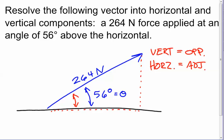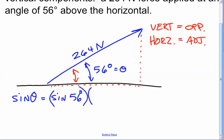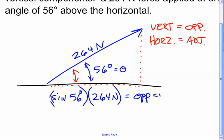So if we use our sine, cosine, and theta rules in connection with that, we can get these components. The sine of theta, which is equal to the sine of 56 degrees, multiplied by the hypotenuse — which is 264 Newtons — is going to give us the side opposite, which is the vertical component. That vertical component is sine of 56 times 264, which equals 218.8.